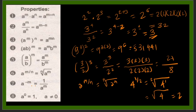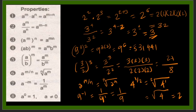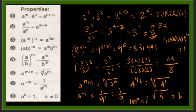Property 6 is the reciprocal property: a base raised to a negative exponent equals 1 over a to the m. For example, 9 raised to the power of negative 1 equals 1 over 9 to the power of 1, which is just 1 over 9. Property 7: any base raised to the power of 0 equals 1. For example, 100 raised to the power of 0 equals 1.